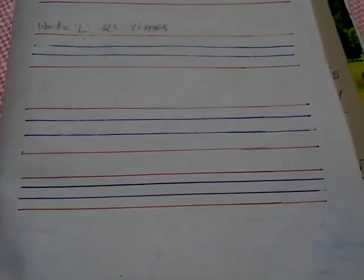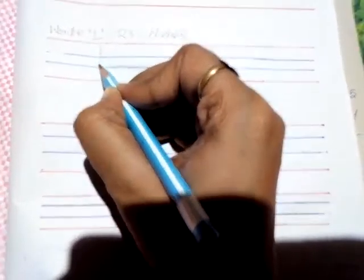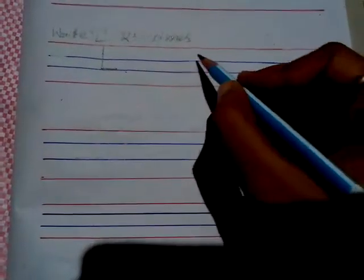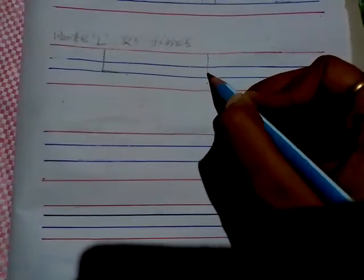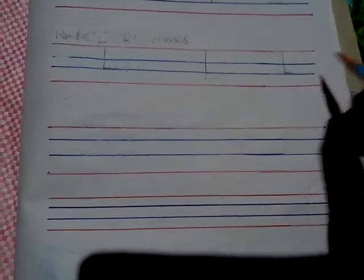Are you ready kids? Now start your writing. First draw a standing line from red line to blue line, then sleeping line. This is capital L. Standing line then sleeping line — capital L.